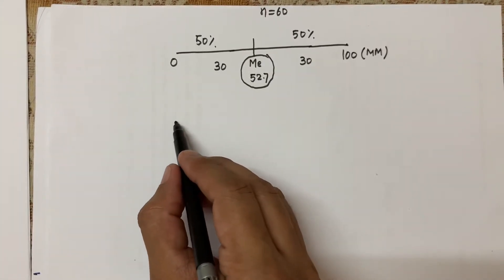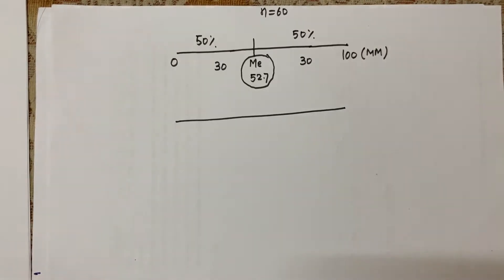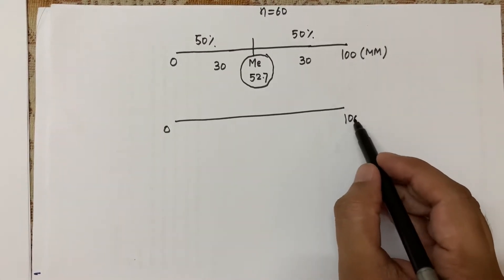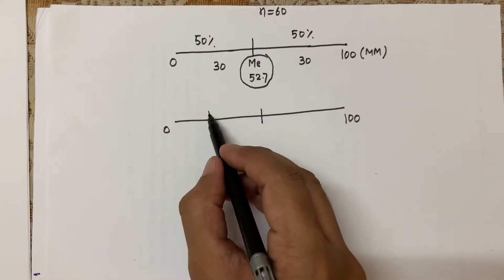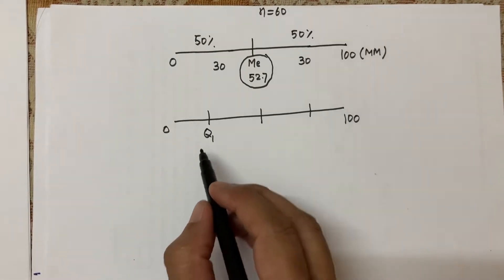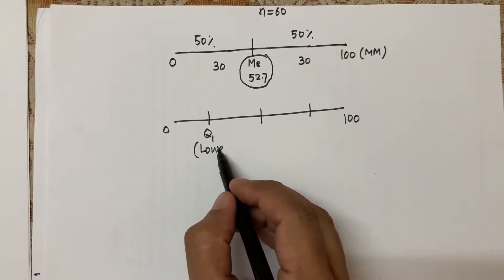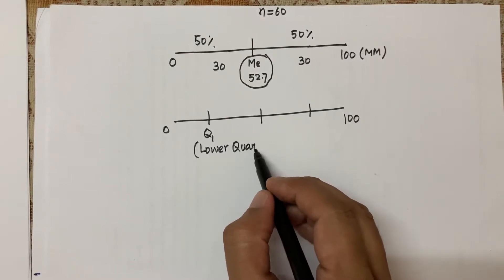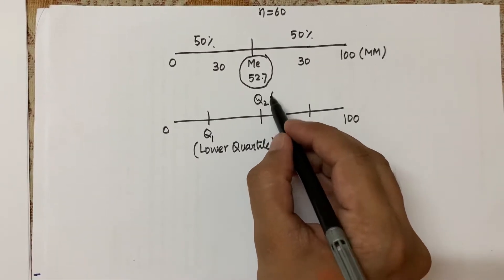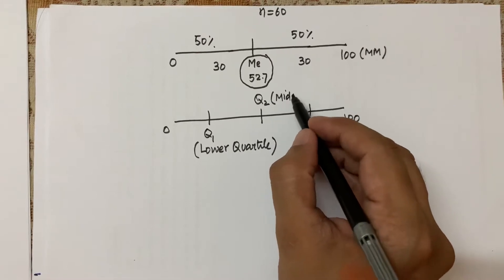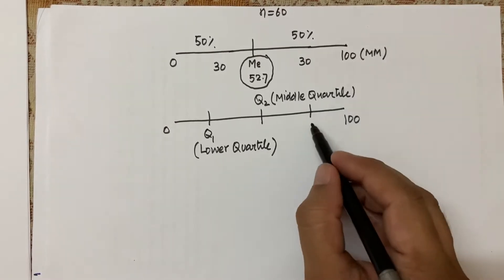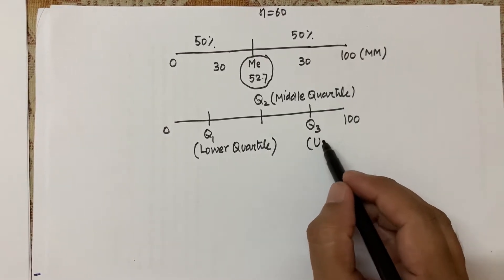Now what exactly does quartile do? Again with data of 60 students scoring between 0 to 100, quartile divides the data into four equal parts. The first division is Q1, the first quartile, also called the lower quartile. The center is Q2, also known as the middle quartile. And the value on the right is Q3, known as the upper quartile.